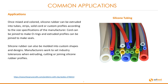Let's have a look at some of the common applications. Once mixed and colored, silicone rubber can be extruded into tubes, strips, solid core, or custom profiles according to the size specifications of the manufacturer. Cord can be joined to make O-rings, and extruded profiles can be joined to make seals. Silicone rubber can also be molded into custom shapes and designs. Manufacturers work to set industry tolerances when extruding, cutting, or joining silicone rubber profiles.